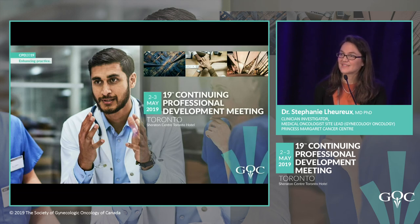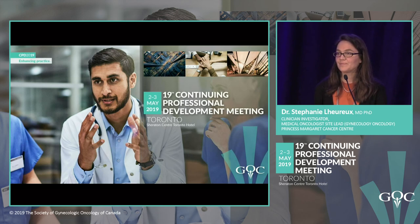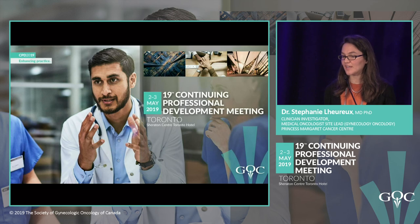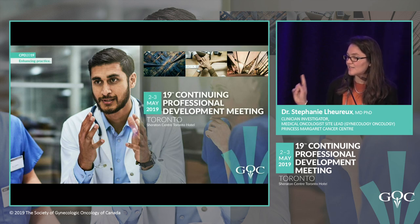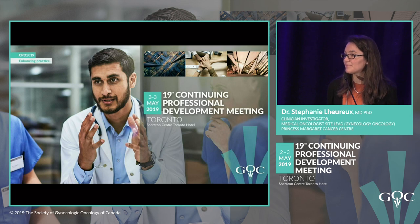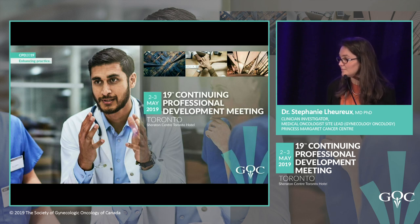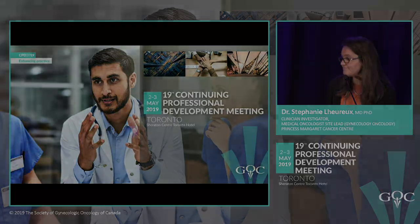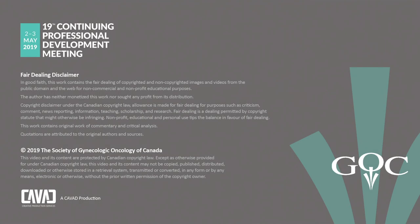A question about clear cell carcinoma and pembrolizumab: should PDL1, MSI, or MMR IHC be used to select patients? Clear cell carcinoma is relatively chemotherapy-resistant, and current immunotherapy trials suggest clear cell carcinoma may be the subtype most likely to benefit from immune therapy. In that population, testing for MSI may help gain access to checkpoint inhibitors.